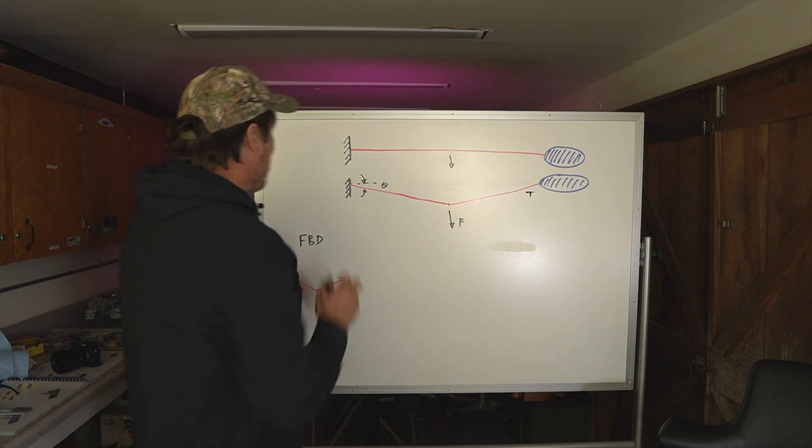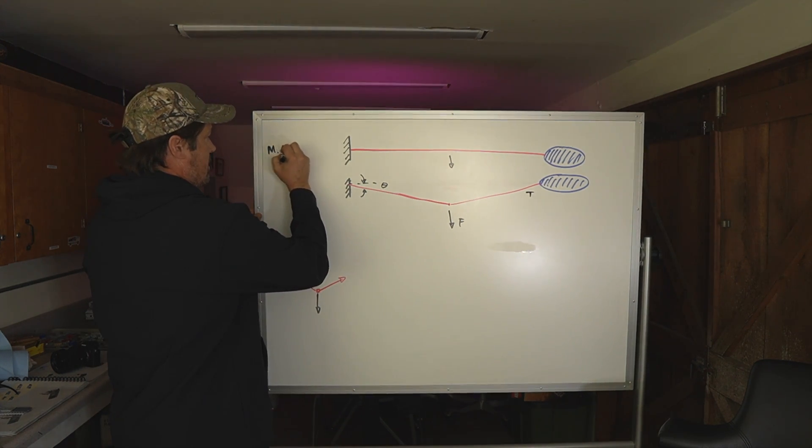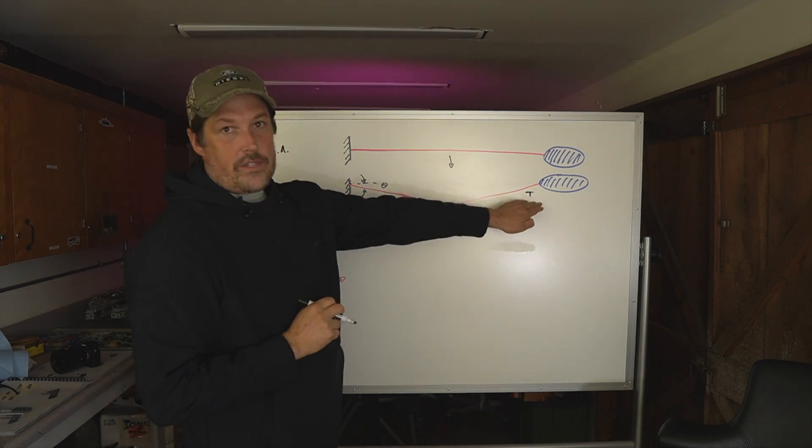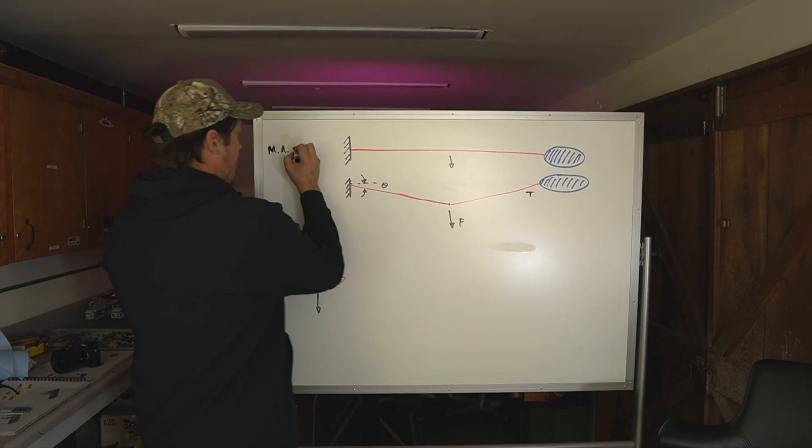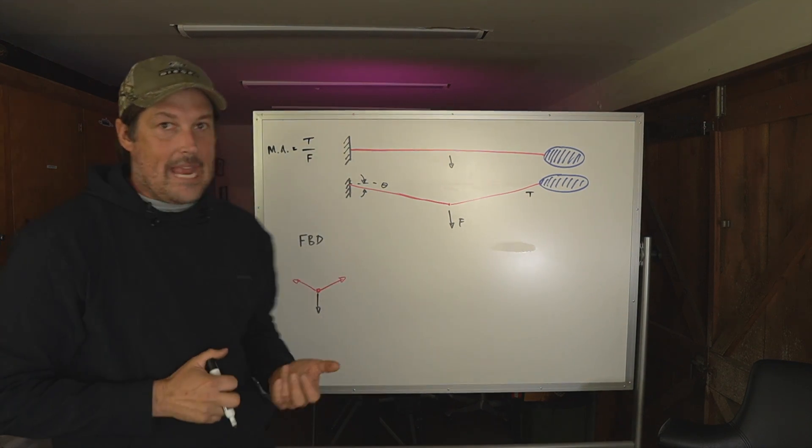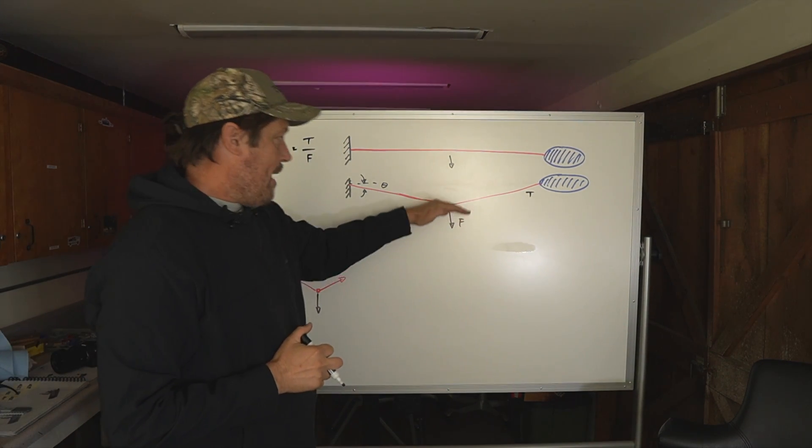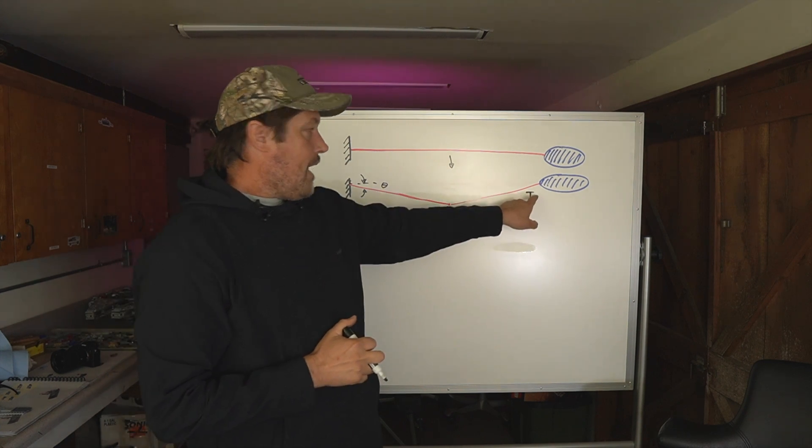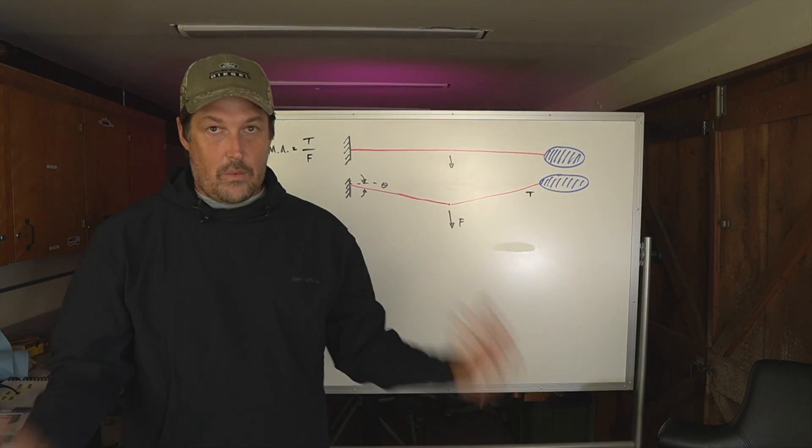So the mechanical advantage is the output force divided by the input force. It's the tension divided by the F. That's mechanical advantage. So if I put in 100 pounds of force and I get 300 out, my mechanical advantage is just 3 to 1.